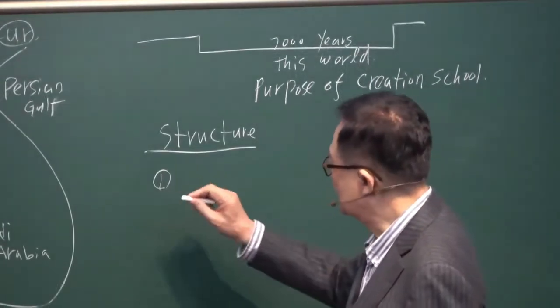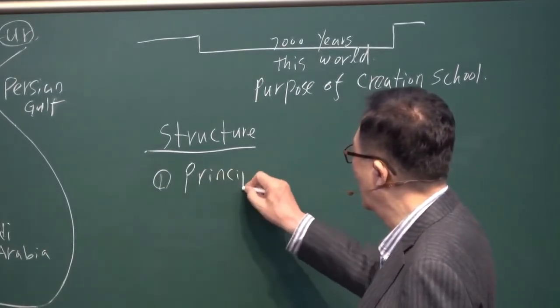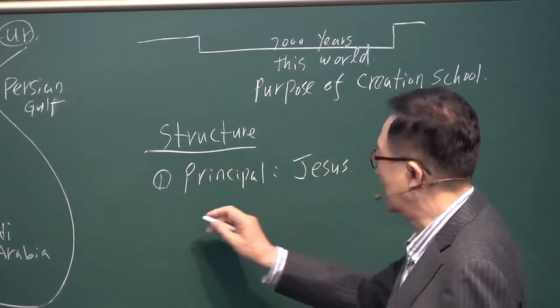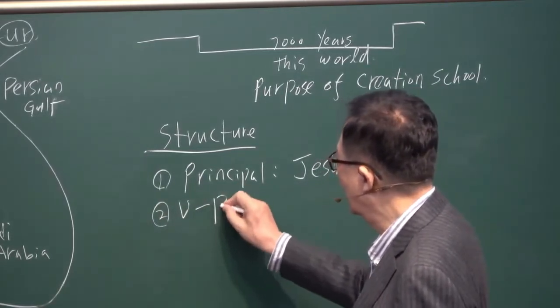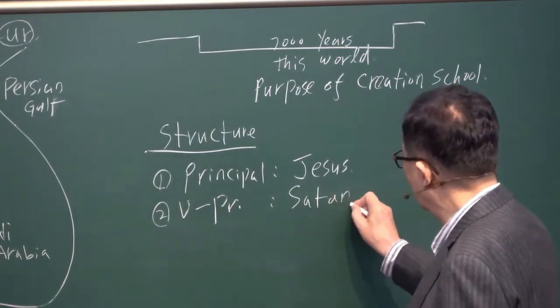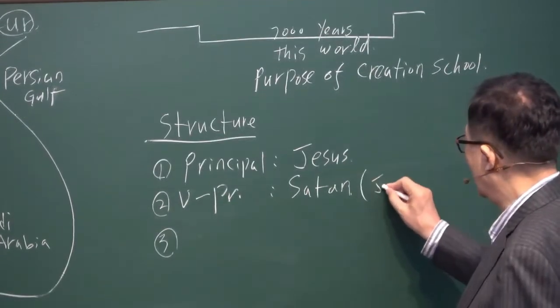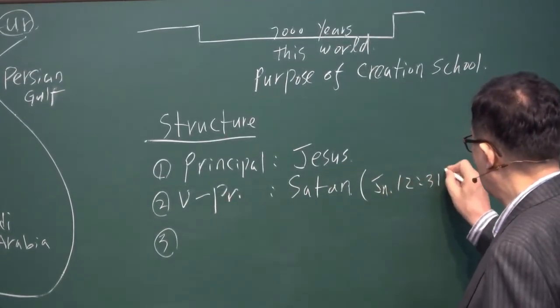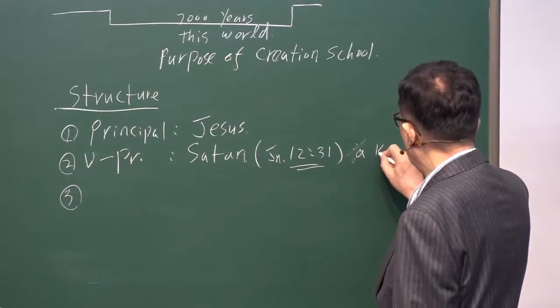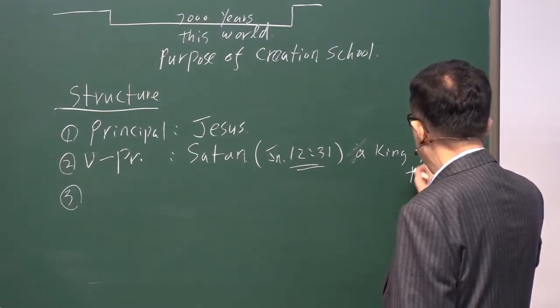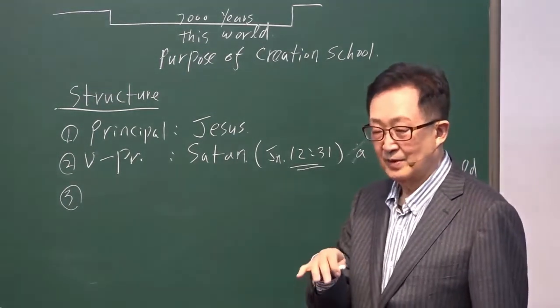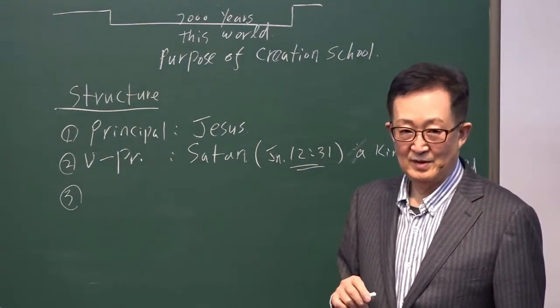First is school principal. Principal is who? Jesus. Vice principal, Jesus named Satan. In John 12:30-31 said, he is the Satan, he is a king of this world. Jesus named him king, a king of this world.